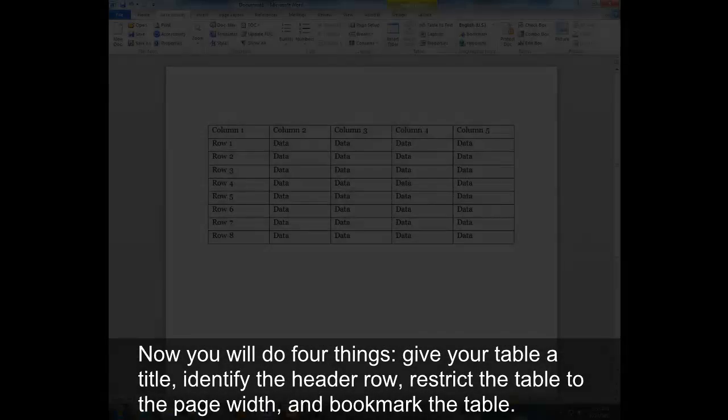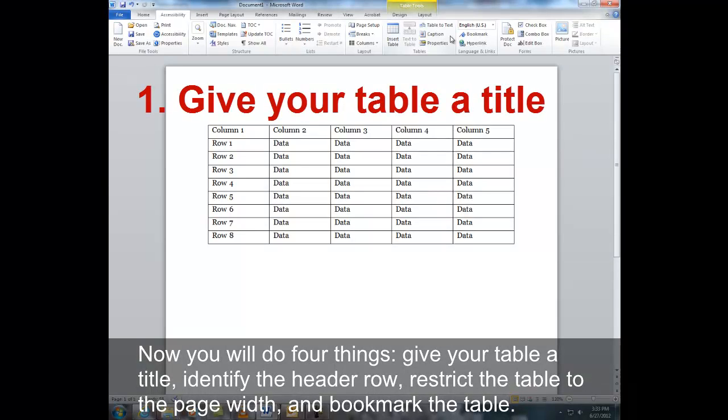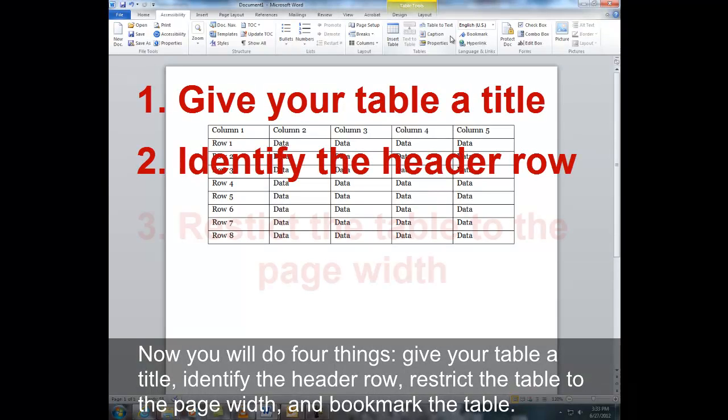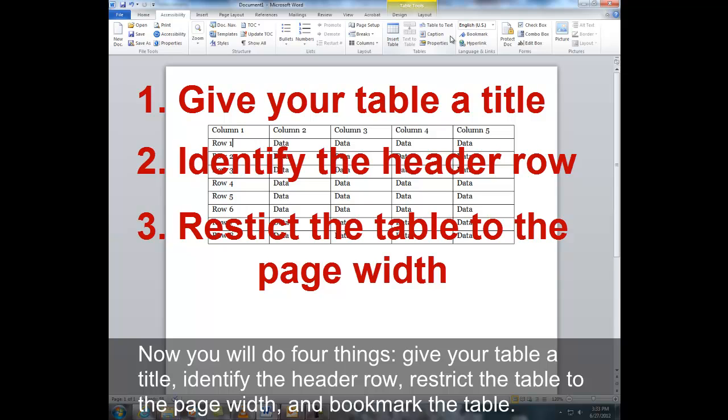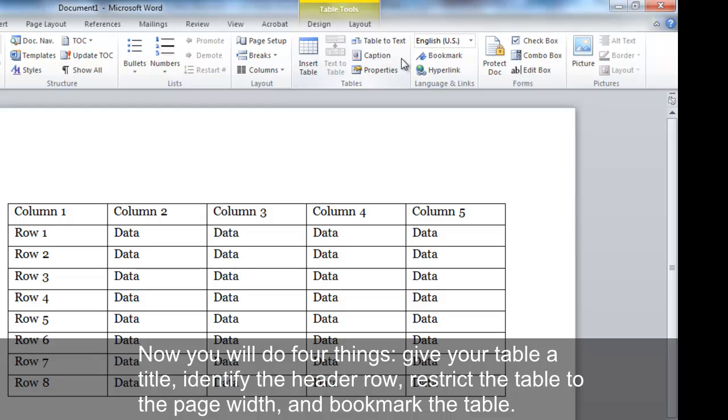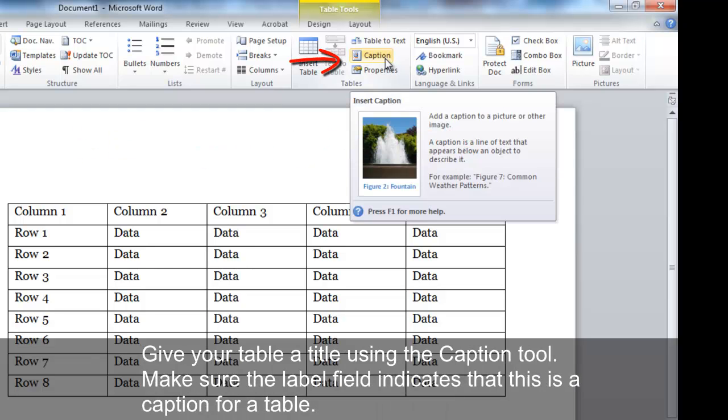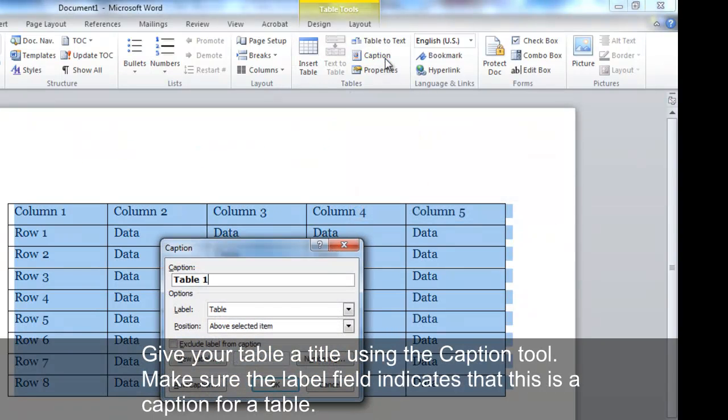Now you will do four things. Give your table a title, identify the header row, restrict the table to the page width, and bookmark the table. Give your table a title using the Caption tool. Make sure the label field indicates that this is a caption for a table.